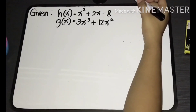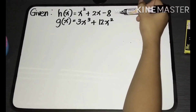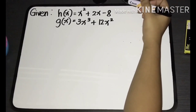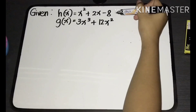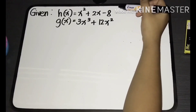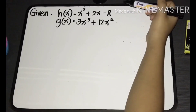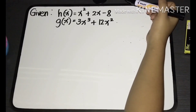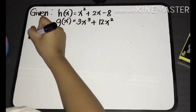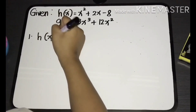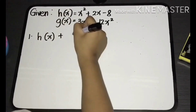Let's now have another example. We have h of x equal to x squared plus 2x minus 8, and g of x equal to 3x cubed plus 12x squared. We are to find the sum of h of x and g of x.